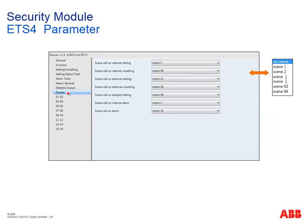With the scenes parameter, standard 8-bit KNX scenes can be called — for example, when the system is internally set, call scene 5, or when an intrusion alarm occurs, call scene 19 to switch on lights and drive shutters up.